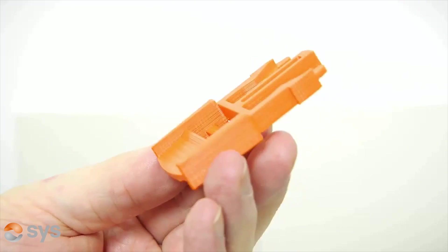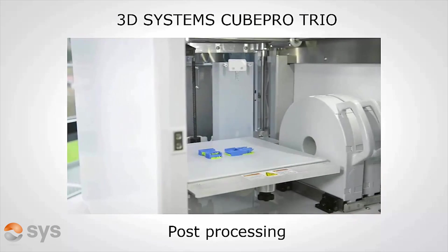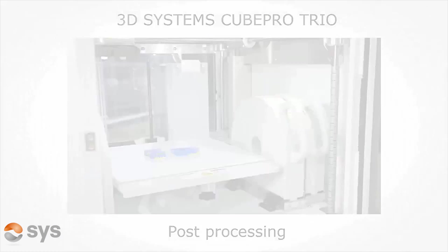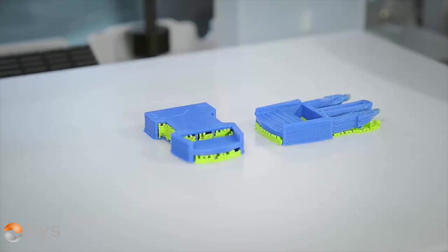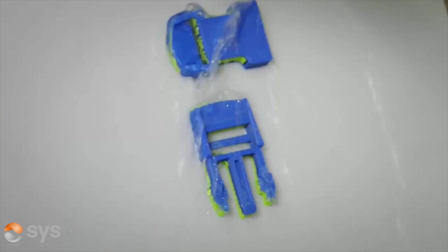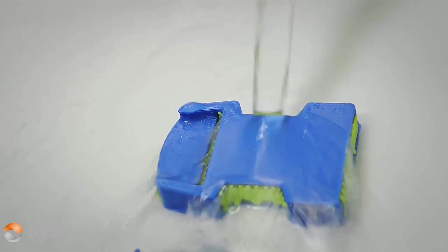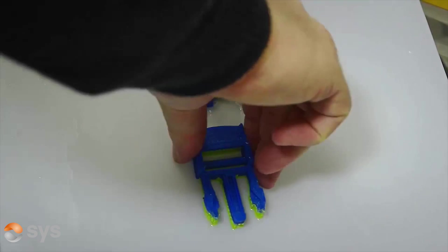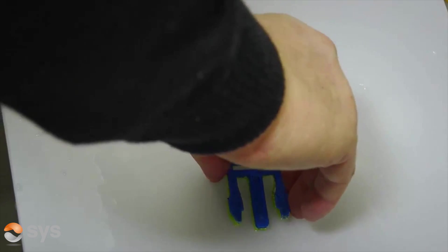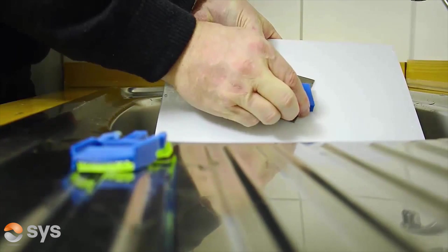With the Cube Pro Trio, post processing requires removal of the glass build plate and then to release the parts you need to run under warm water for approximately two minutes. Peeling by hand and using the scraper to ensure the model is removed as well as all the support material is removed from the plate.